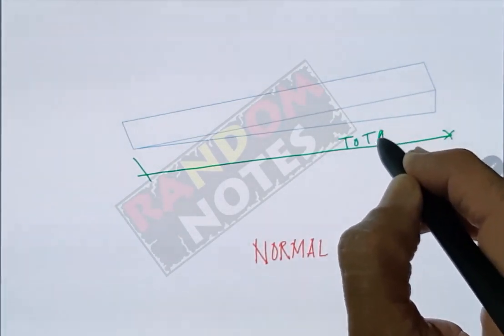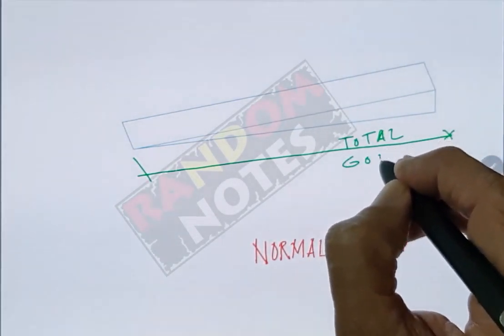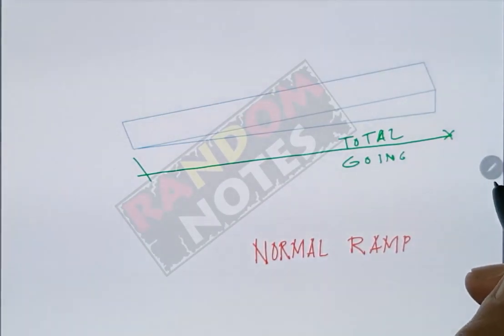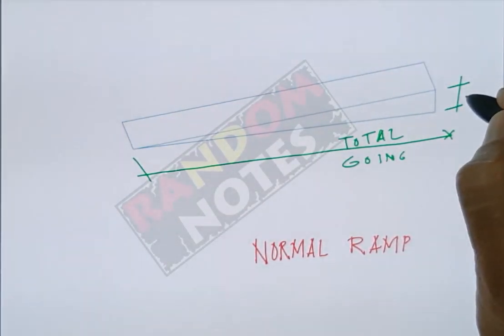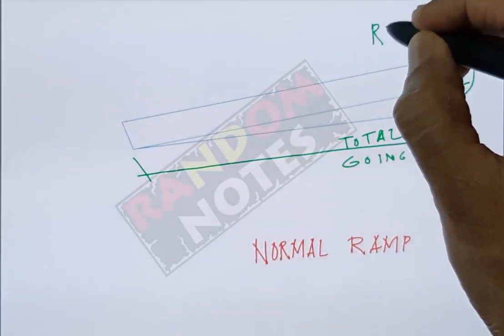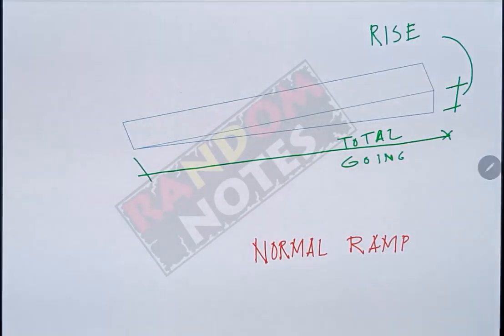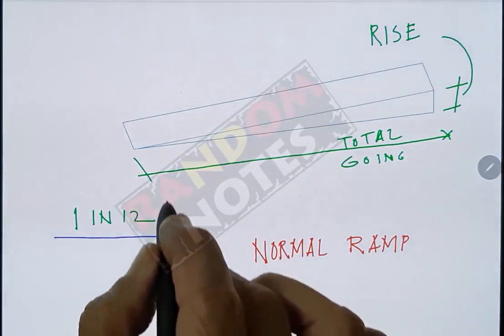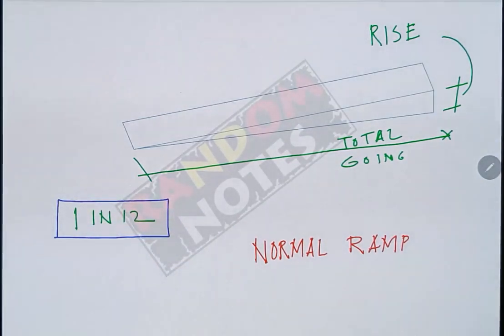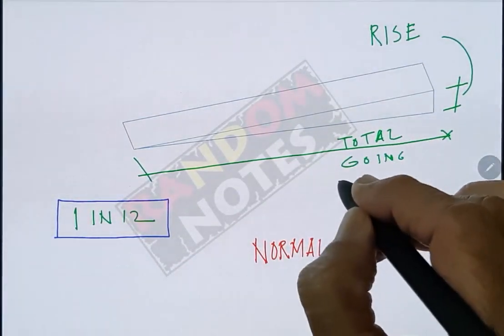This is the total going or total run of the ramp. This is the rise achieved in that going or run. The gradient of a ramp is defined as the dimension of run required to achieve a rise of one unit of dimension.